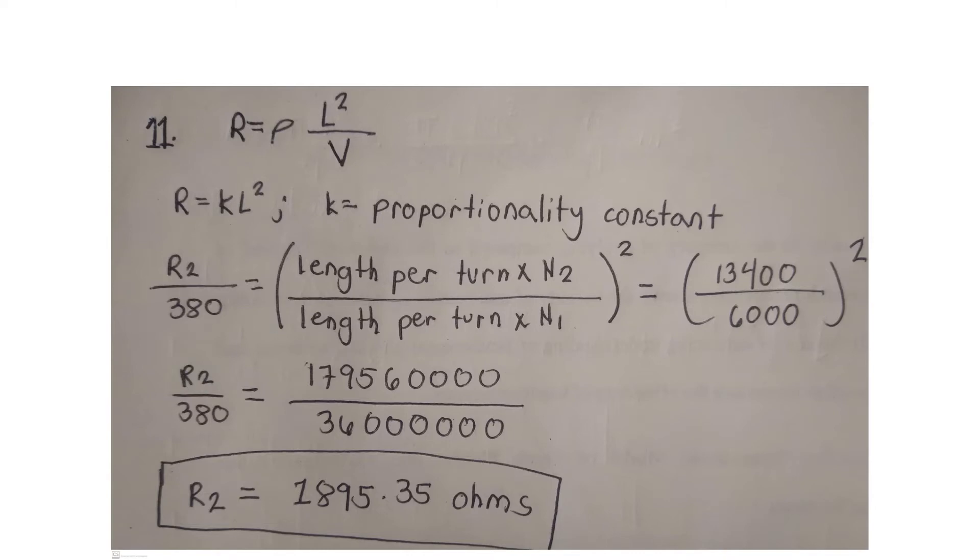We will use the formula: resistance is equal to resistivity multiplied by the square of the length all over volume. Since the coil is rewound with the same weight of wire, the volumes of the wire used in both conditions are constant.